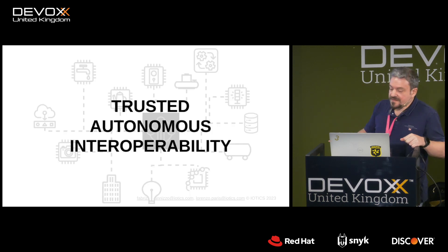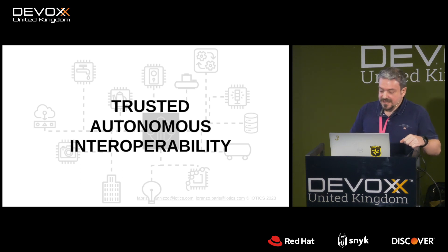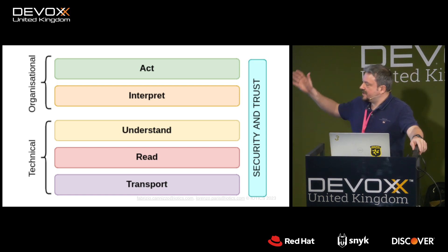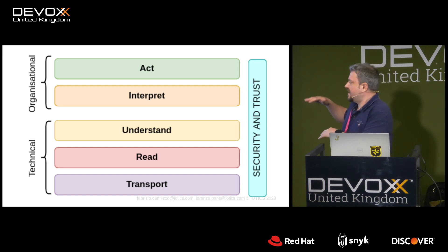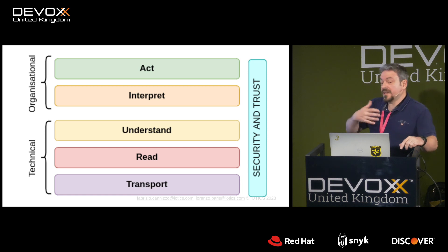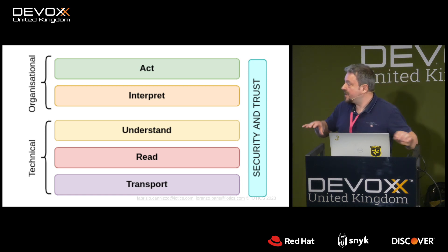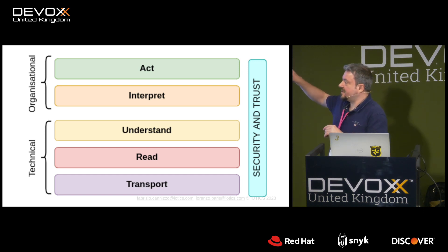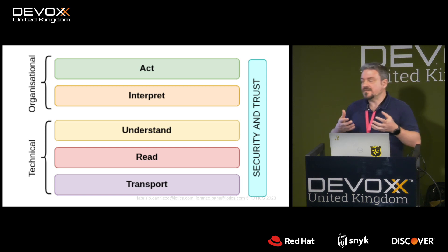So what do we mean by interoperability? There's a layer-cake stack that represents it. For a smart city to work you must implement both technical interoperability — software systems talking to each other — and organizational interoperability — organizations changing their business processes to accommodate new players.